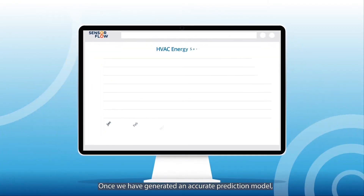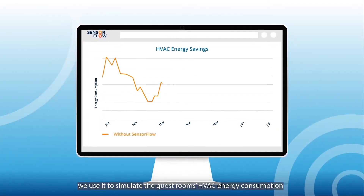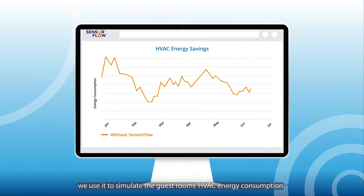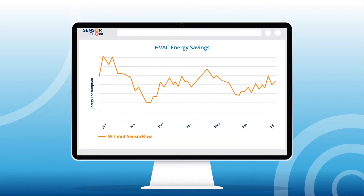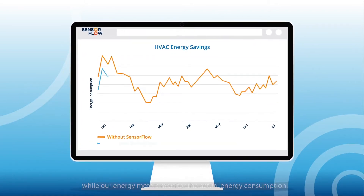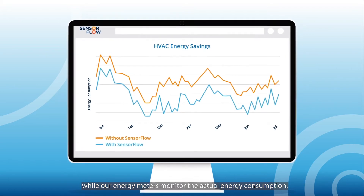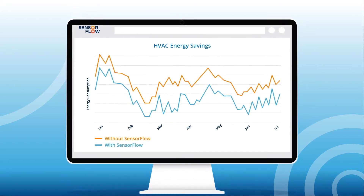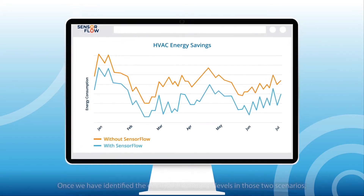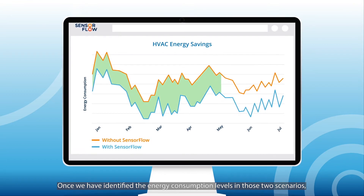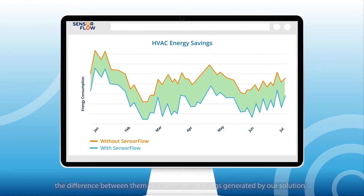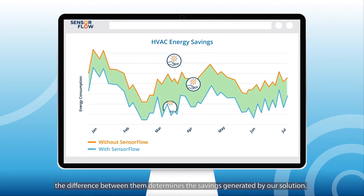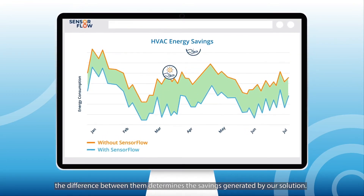So how does SensorFlow use this prediction model to estimate your HVAC energy savings? Once we have generated an accurate prediction model, we use it to simulate the guest room's HVAC energy consumption if SensorFlow was not installed, while our energy meters monitor the actual energy consumption. Once we have identified the energy consumption levels in those two scenarios, the difference between them determines the savings generated by our solution.